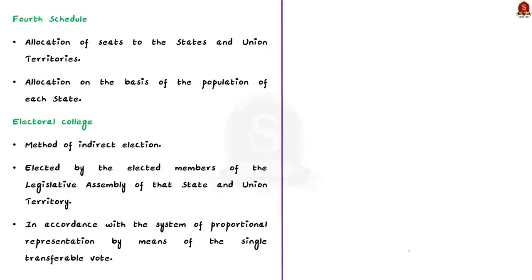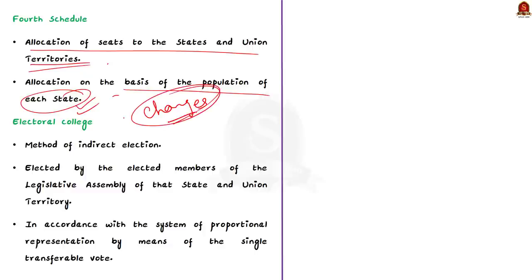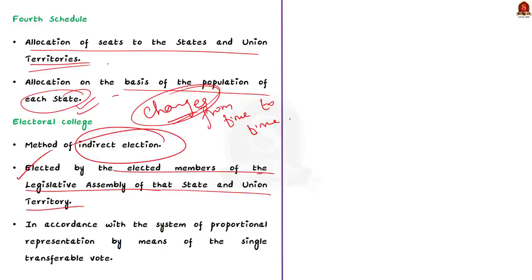Also note that the Fourth Schedule to the Constitution provides for allocation of seats to the states and union territories in Rajya Sabha. The allocation of seats is made on the basis of the population of each state. Consequent on the reorganization of states and formation of new states, the number of elected seats in the Rajya Sabha allocated to the states and union territories has changed from time to time since 1952. Now let's see the electoral college. The representatives of the states and the union territories in the Rajya Sabha are elected by the method of indirect election. The representatives of each state and three union territories are elected by the elected members of legislative assembly of that state and union territories. The election is conducted in accordance with the principle of proportional representation by means of the single transferable vote.